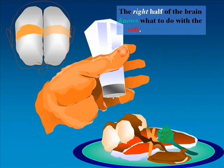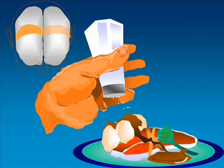The left half of the brain feels the difference between flakes, rice or salt. Fine. Grainy. The right half of the brain knows what to do with the salt.